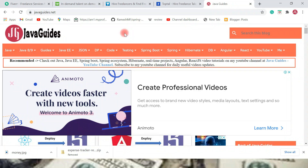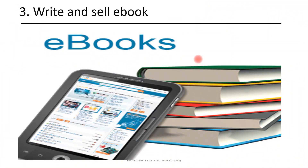The third way is to write and sell eBooks. If you are good in some subject, you can write a book on it and sell it on platforms like Amazon, which is a very popular platform for selling both eBooks and physical books. For example, if you are good in web development or backend technologies, you can write an eBook on it and sell it on Amazon or other popular platforms. Utilize your expertise, write an eBook, and earn money.